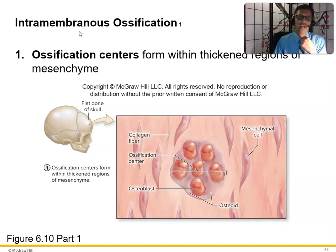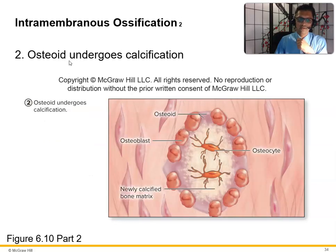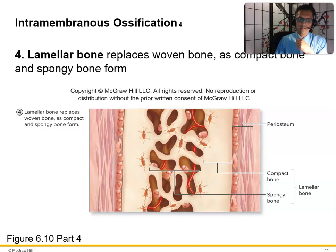In intramembranous ossification, ossification centers form within thickened regions of the mesenchyme — osteoblasts make bone from osteoid, which undergoes calcification. Then woven bone and the surrounding periosteum form as the mesenchyme condenses. Finally, lamellar bone replaces woven bone as compact bone and spongy bone form.